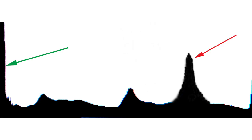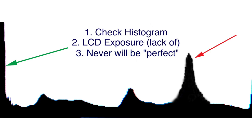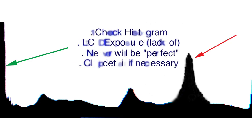So there are four aspects. Number one: by checking our histogram, we can always immediately know if we have a good exposure. Number two: the LCD does not tell us about exposure — we need to check the histogram. Number three: there is no such thing as a perfect histogram; they vary depending on the subject, background, and your photographic style. Number four: sometimes it's okay to clip detail or have what appears to be a very unbalanced histogram. I hope you found this helpful — don't forget to always check your camera's histogram when underwater to make sure you get a proper exposure. Thanks for tuning in.